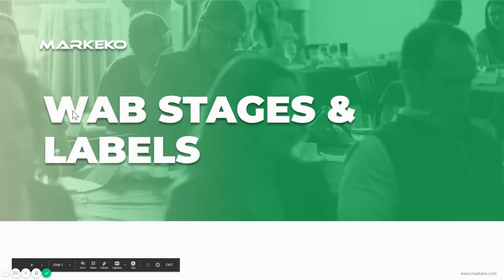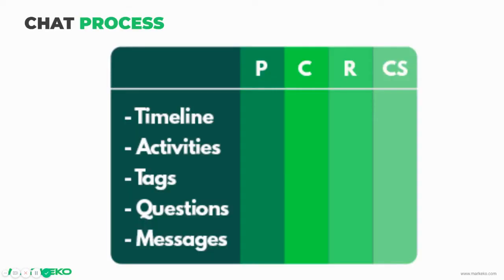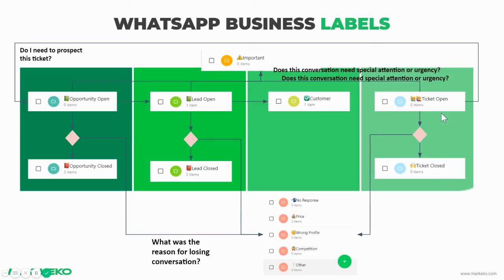So we've talked about the stages within your funnel, where you manage conversations. Here I'm going to give you a brief summary on labels and just how that funnel works stage by stage. You have prospecting, conversion, retention, customer service, and all the different things within your process — and how the labels look in your workflow within that process.